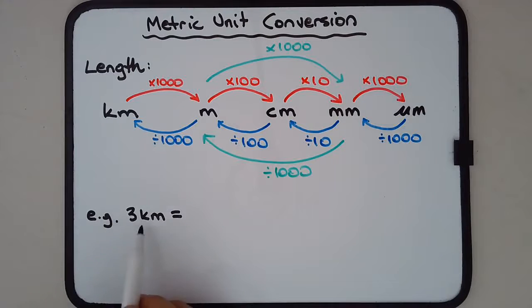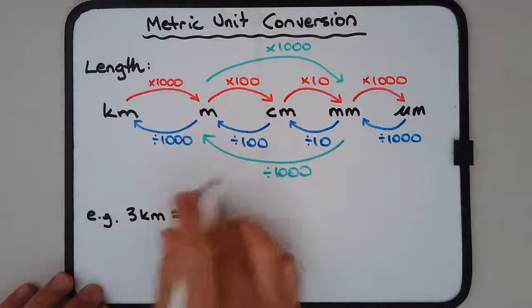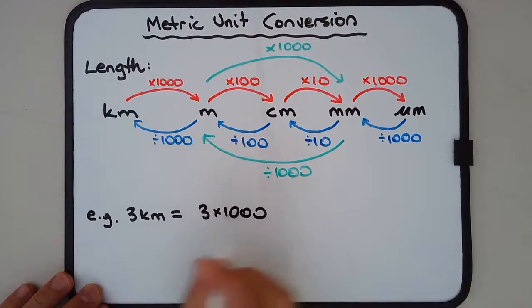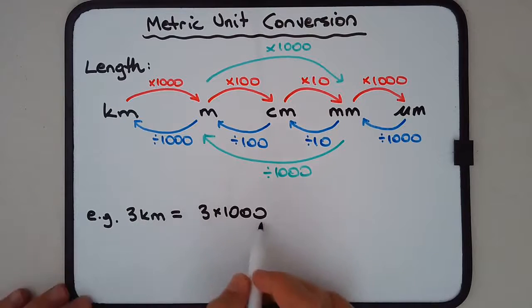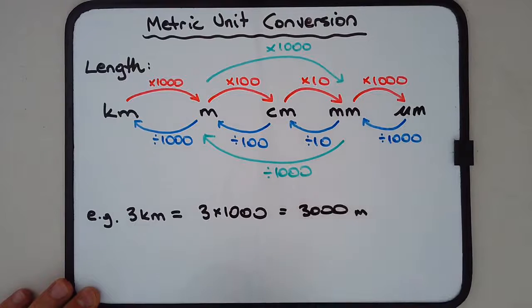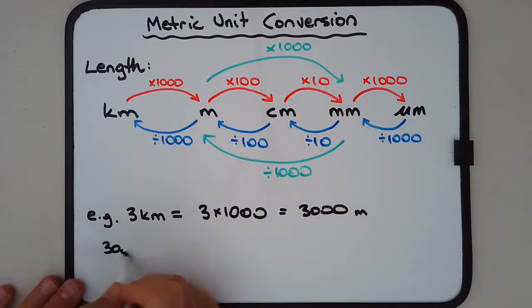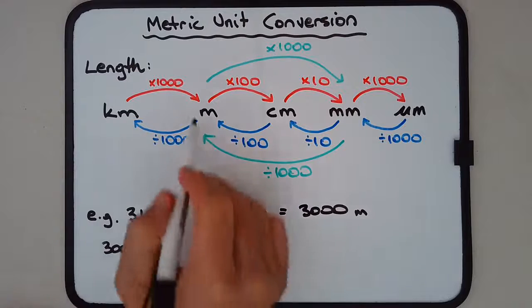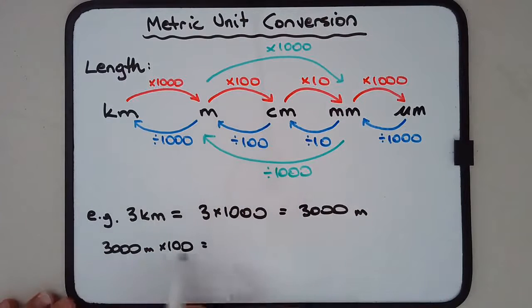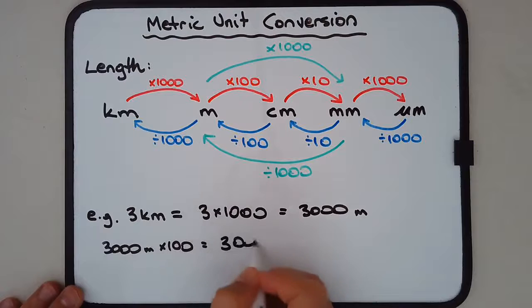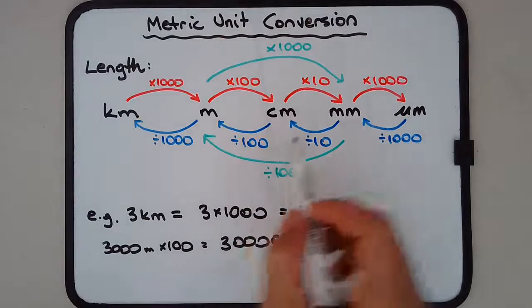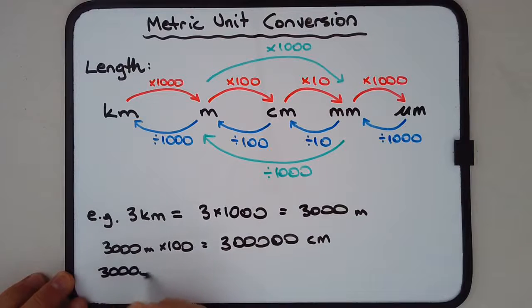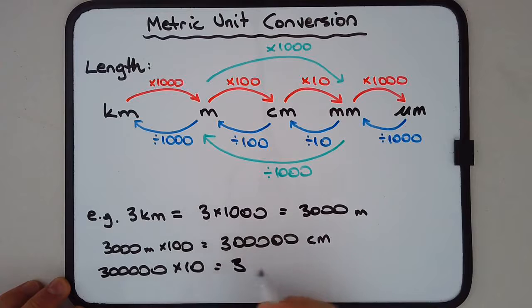Let's look at a quick example — convert 3 kilometers all the way to micrometers. Three kilometers into meters: multiply by a thousand, since 'k' means kilo, meaning a thousand. So three lots of a thousand equals three thousand meters. Meters into centimeters: three thousand times a hundred — adding two more zeros — equals three hundred thousand centimeters. Centimeters to millimeters: three hundred thousand times ten equals three million millimeters.